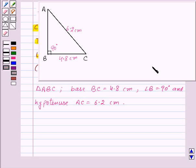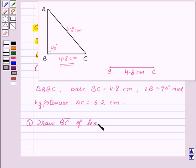Now let us construct the triangle ABC. Here we are given the base BC equal to 4.8 cm. So first of all, let us draw a line segment BC of length 4.8 cm. Thus our first step of construction is draw line segment BC of length 4.8 cm.